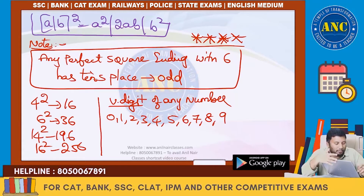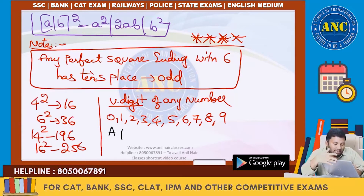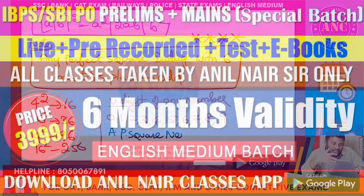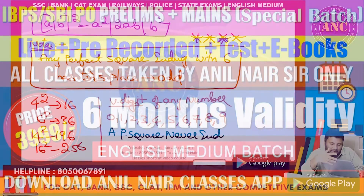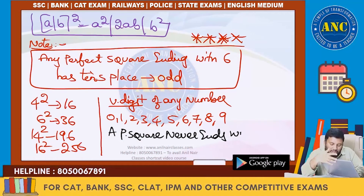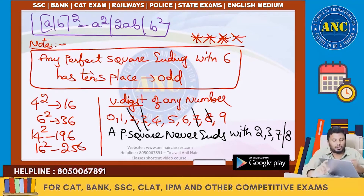Another point which we know: a perfect square never ends with 2, 3, 7, or 8. This is also something I will prove. A perfect square never ends with 2, 3, 7, or 8 — these are not possible.